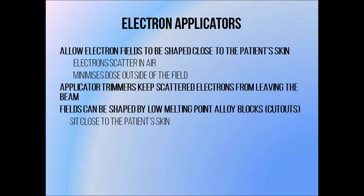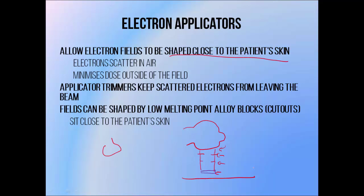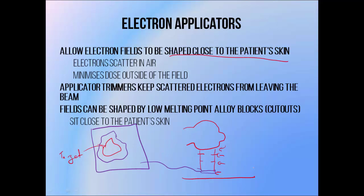Much like low-energy x-rays, electrons scatter a lot in air, so if you want a nicely defined radiation beam you need to shape it close to the patient's skin. We do this using an electron applicator, mounted just below the treatment head. It consists of a frame containing several layers of radiation shields known as trimmers, and a slot in the end where you can define the beam shape using a custom-made metal shield made out of a low melting point alloy — a block of metal containing a hole that shapes the beam to conform to a target. This mounting allows the beam to be shaped about 5 cm away from the patient's skin. The trimmers account for the fact that electron beams scatter a lot, so any scattered electrons that might hit the patient outside of the field hit the trimmers instead.